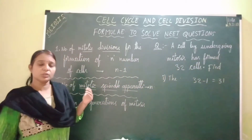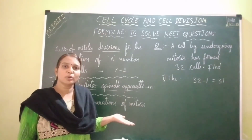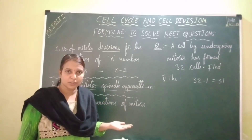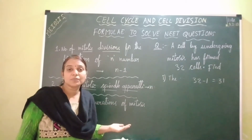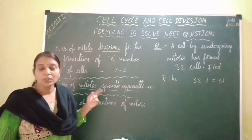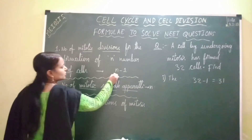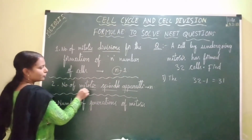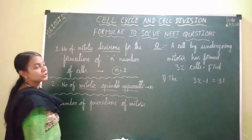For the same question, we can say that the number of cells which have undergone mitosis are 31, the number of cells formed after mitosis are 32, and the number of mitotic divisions which have occurred is 31 — using the formula n minus 1, where n equals the number of cells formed, which is 32. Next, find the number of mitotic spindle apparatus required for the formation of 32 cells.